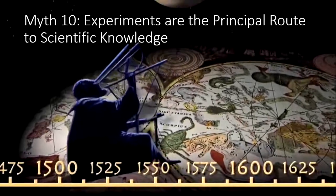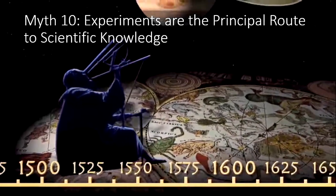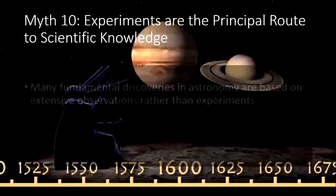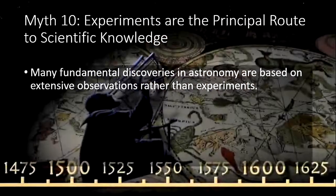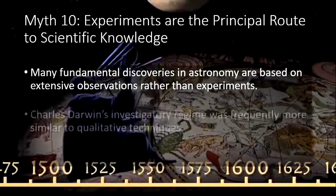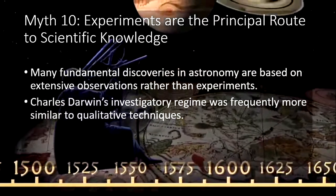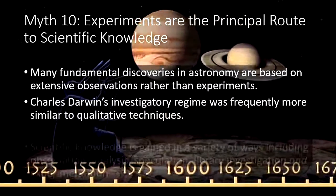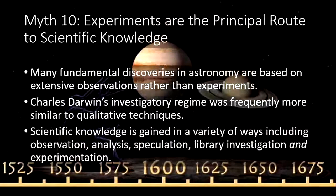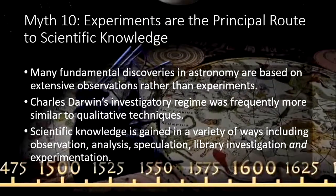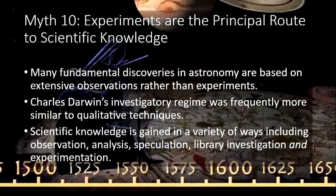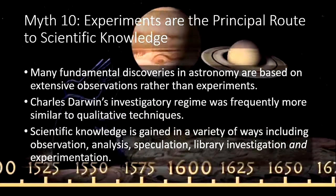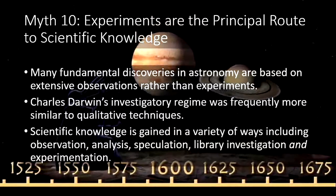The next myth is that experiments are the principal route to scientific knowledge. You recall older discoveries — many fundamental discoveries in astronomy are based on extensive observation rather than experiments. Charles Darwin's investigatory regime was frequently more similar to qualitative techniques of social sciences than the sciences. Scientific knowledge is gained in a variety of ways including observation, analysis, speculation, library investigations, and also through experimentation. So experimentation is not the only or principal route to scientific knowledge.